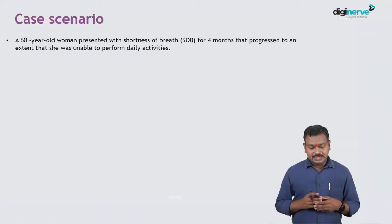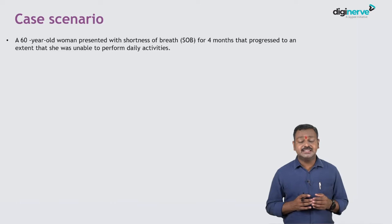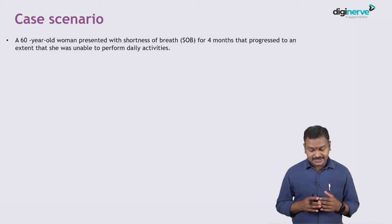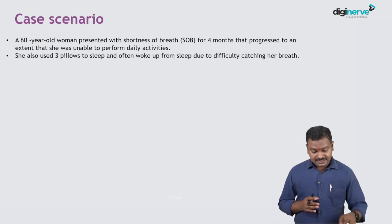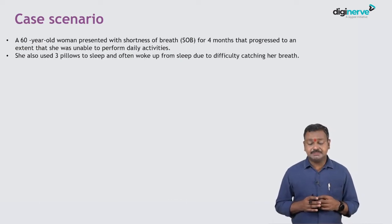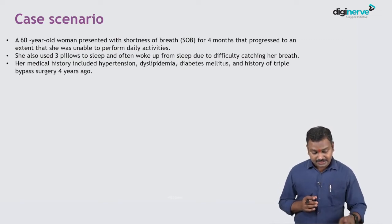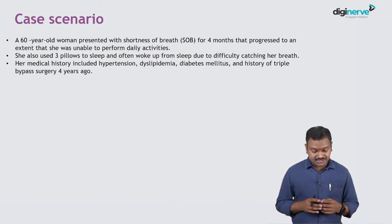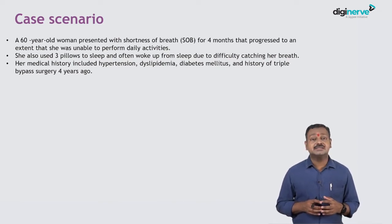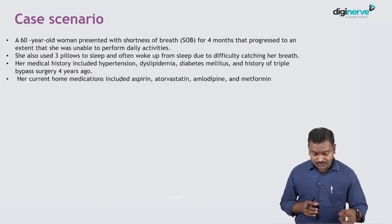Let's begin the class with a case scenario. A 60-year-old woman presented with history of shortness of breath for four months that has progressed to an extent that she is unable to do her daily activities. She uses three pillows to sleep and often wakes up during sleep with difficulty catching her breath. Her medical history includes hypertension, dyslipidemia, and diabetes mellitus, and a history of triple bypass surgery done four years ago.